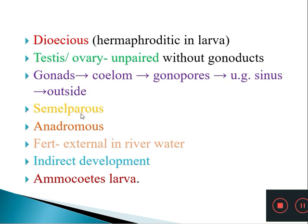Petromyzon is semelparous, meaning it breeds only once in its lifetime after which it dies. They are anadromous migrants — though their home is the sea, during spawning they migrate to fresh water such as rivers and streams. Fertilization is external, with gametes released into river water. Development is indirect, with a larval stage called the ammocoetes larva.